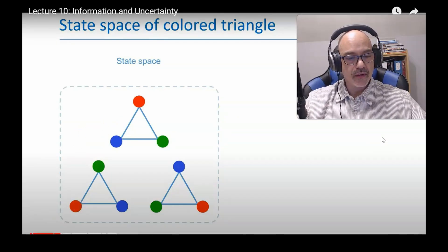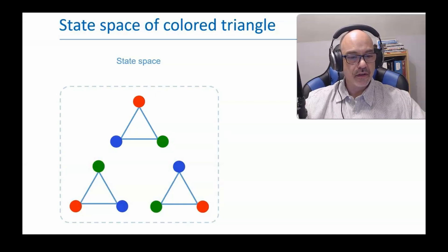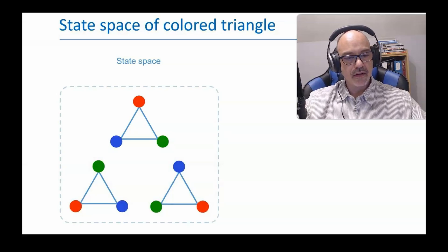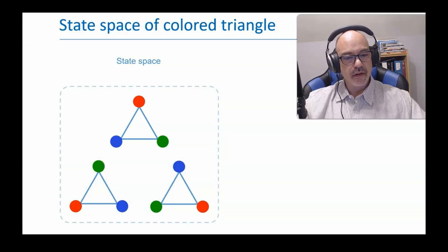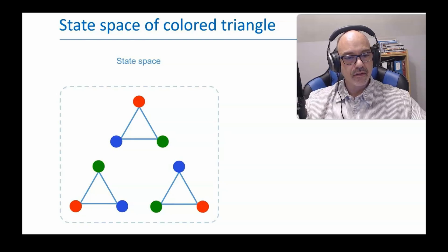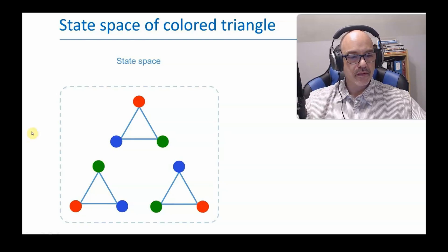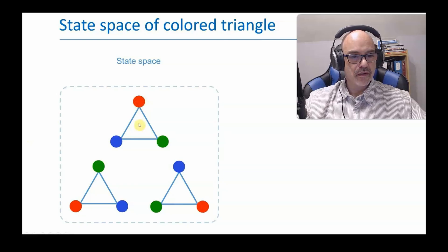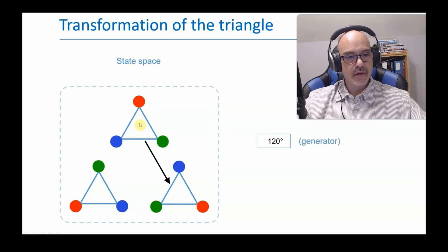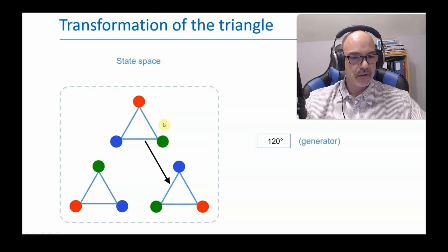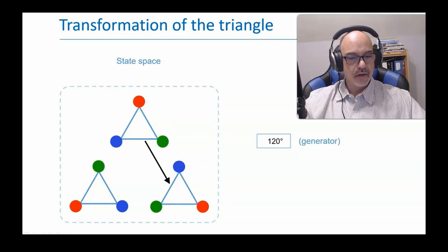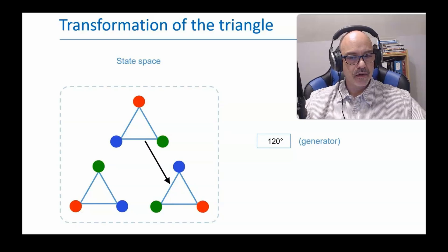Now we'll change our perspective a little. Rather than thinking in terms of the state space, we'll think in terms of transformations from one state to another. For example, suppose that we start with red up. If we rotate the triangle around its own center clockwise by 120 degrees, or one-third of a full rotation, we get red right.